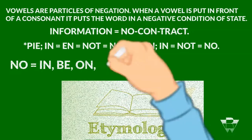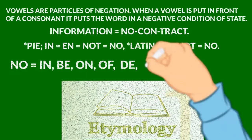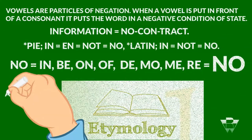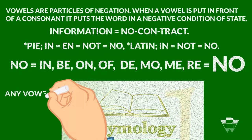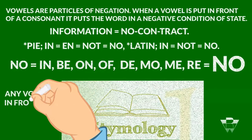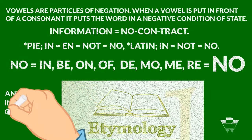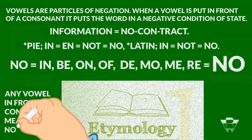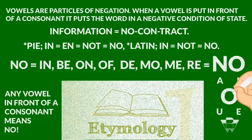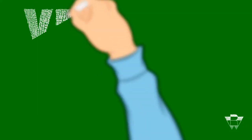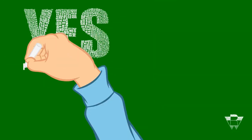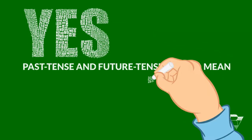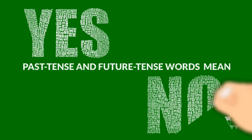I go to the earliest known meaning of the word, which usually means the PIE root — the Proto-Indo-European root — and I go by that. If you do that, 9.9 times out of 10 you will find that those words that have a vowel in front of a consonant at the beginning of the word will mean no. They literally mean no — they mean go backwards, or away from, or they negate in some way. That's easy to qualify for yourself; all it takes is time.